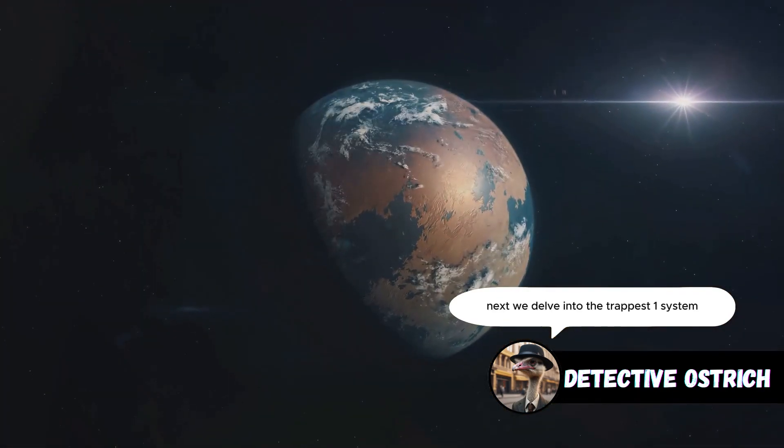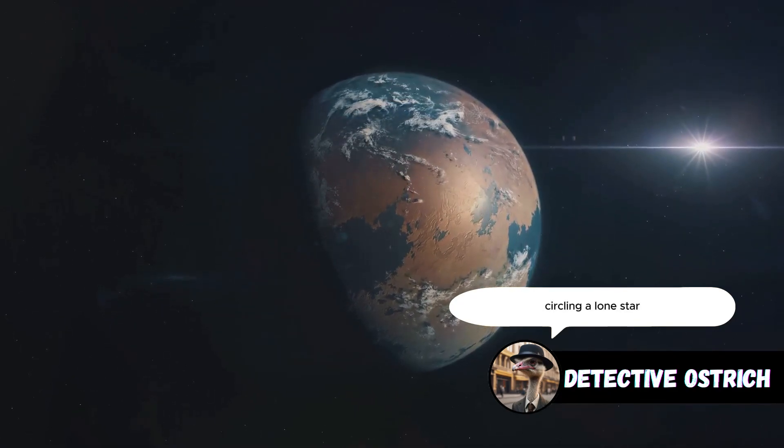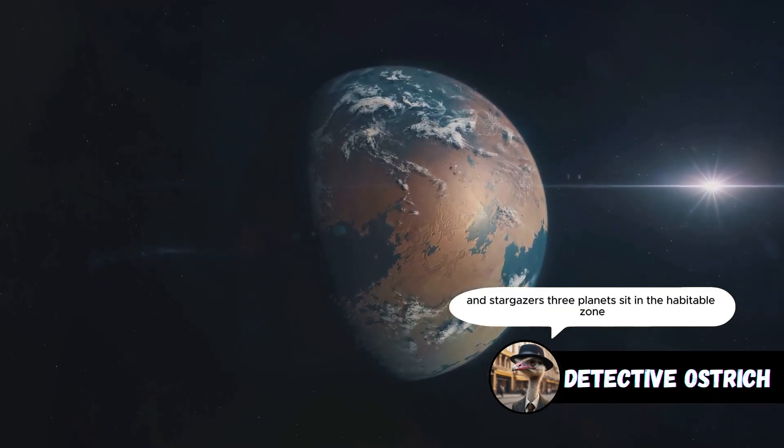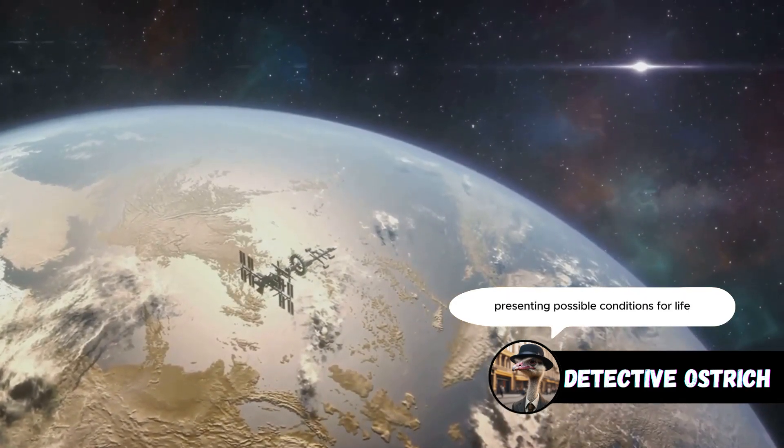Next, we delve into the TRAPPIST-1 system, a constellation of seven Earth-sized planets circling a lone star. This system sparks curiosity in astronomers and stargazers. Three planets sit in the habitable zone, presenting possible conditions for life.